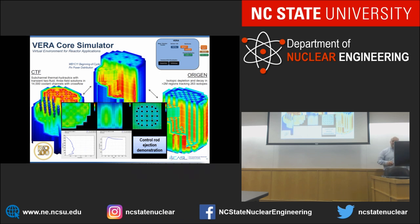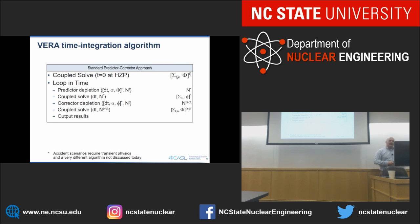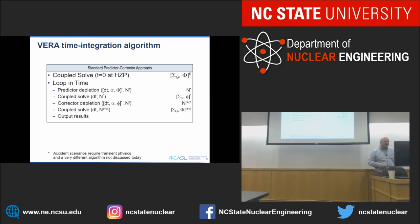The time integration capability in VERA is a standard predictor-corrector approach, similar to what you'd see in a standard lattice physics code for isotopic depletion. Starting with a coupled solve at hot zero power, you loop through user-defined time steps: predict isotopes at the end of the time step, do a coupled Neutronics-TH solve to get updated flux and cross sections, perform a corrector depletion step, do another coupled solve, and output results. For accident transient scenarios this changes somewhat, but I'll focus on nominal operation.